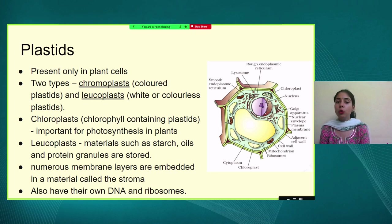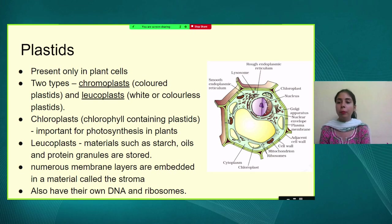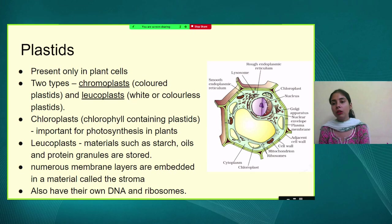The second type of plastid is leucoplast, which is white or colourless. Leucoplasts store starch, oil, and protein granules — basically all the products which are supposed to be stored in the plant. Just like mitochondria, plastids also have their own DNA and their own ribosomes, which is one of their important features.